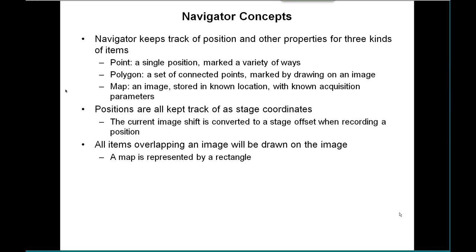Once you have built up some items in your Navigator table, you'll see that all items overlapping an image — no matter where the image comes from, whether it's a map or not — will be drawn on the image. Points will appear as a little cross, polygons as a polygon, and maps as a rectangle. They'll all have their label shown in the middle.